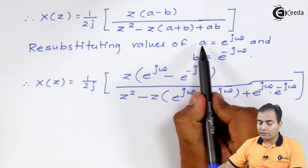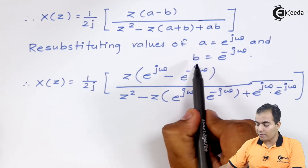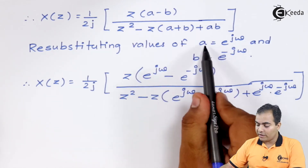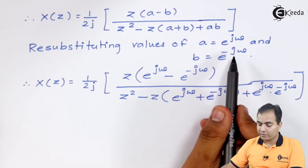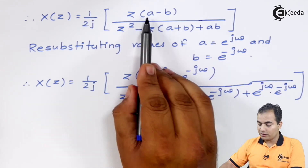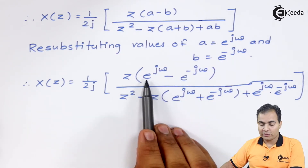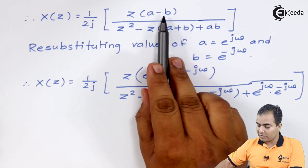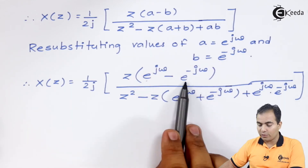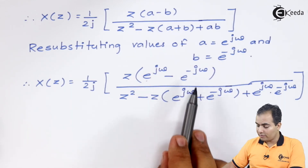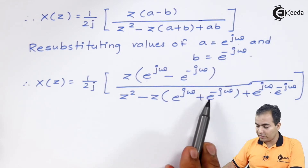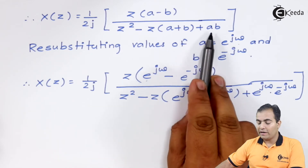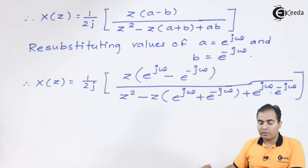I have substituted the values of a and b once again. My a value is e^(jω) and my b value is e^(−jω). So a is replaced by e^(jω) and b is replaced by e^(−jω). In the denominator also, a and b are replaced by e^(jω) and e^(−jω), and at the end both values are multiplied with each other.